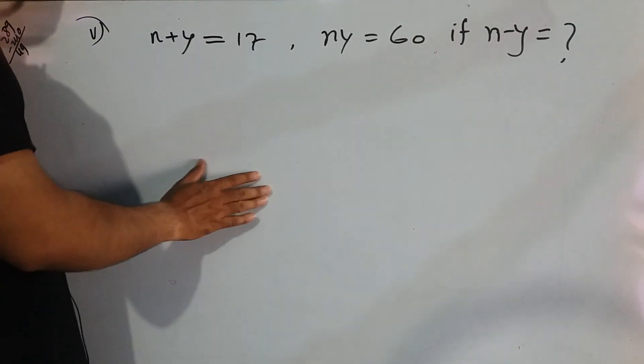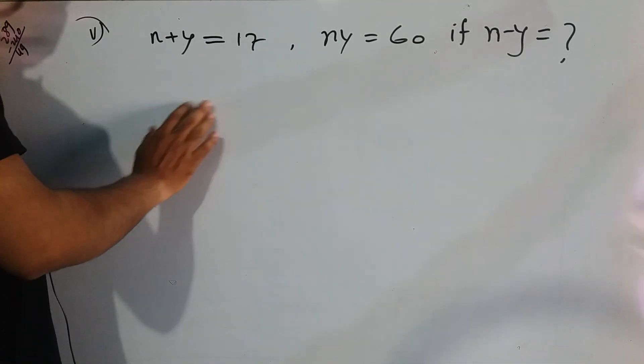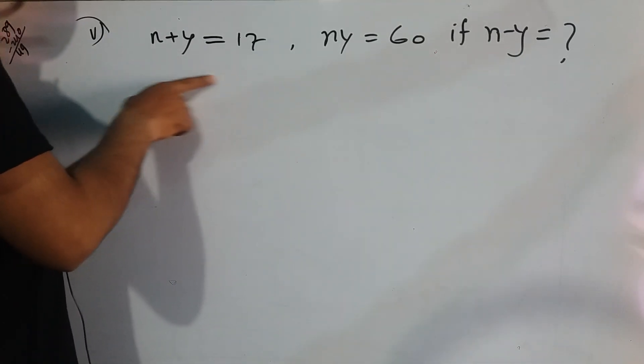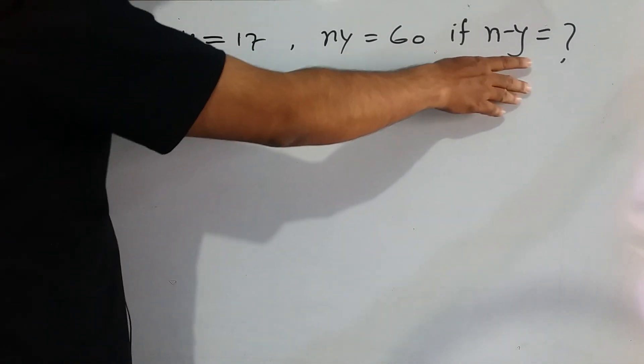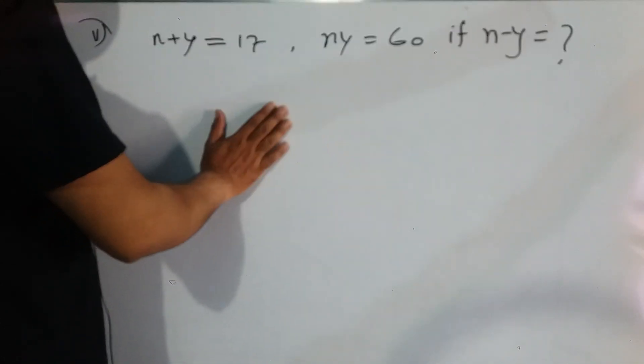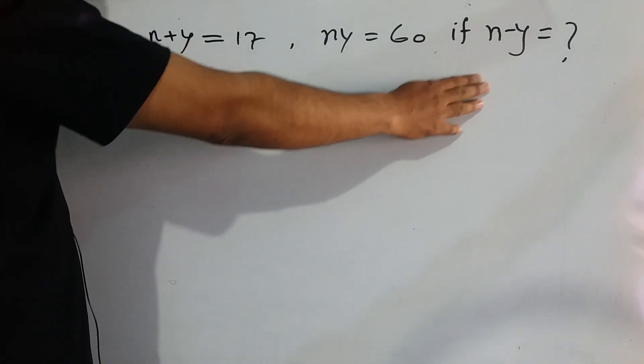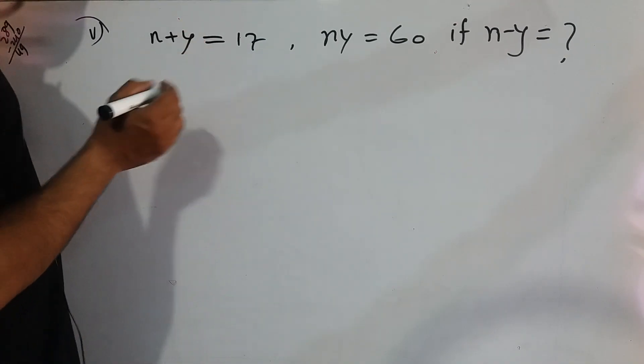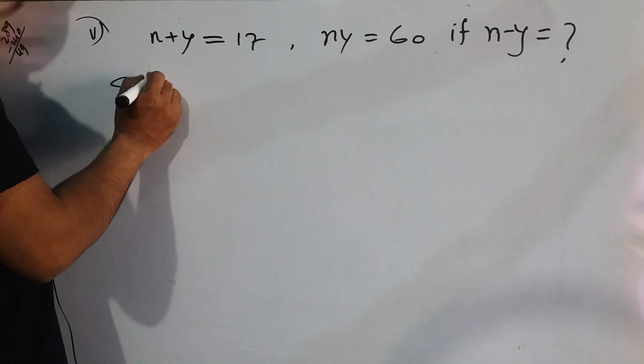Okay, we are back. We are following on the board this math problem: x plus y equals 17 and xy equals 60. If x minus y, what is the value? So we can find out the x minus y value. We are following here, solve it now.